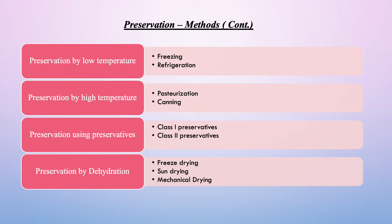The third is preservation using preservatives. It includes use of class 1 and class 2 preservatives. Class 1 preservatives are commonly used household ingredients such as salt, sugar, spices, vinegar, honey and vegetable oils. Whereas class 2 preservatives are chemical preservatives such as benzoic acid, sorbic acid, etc.